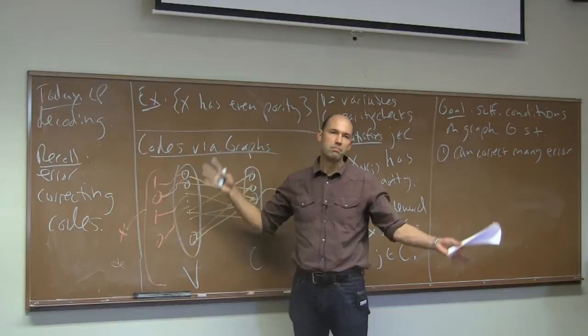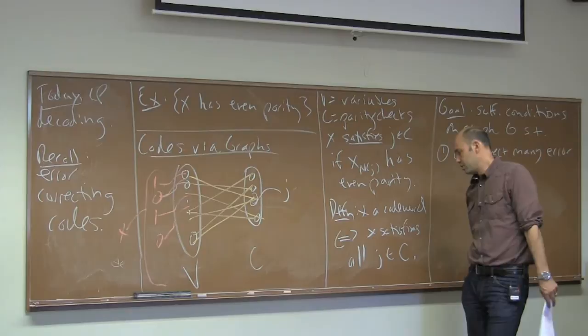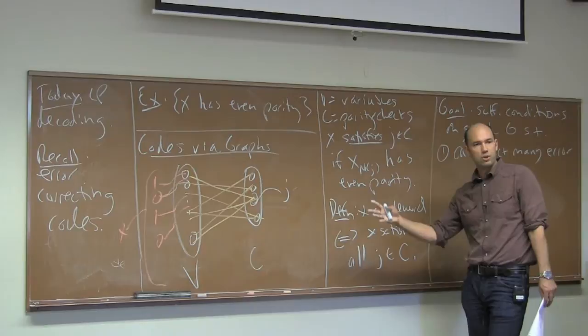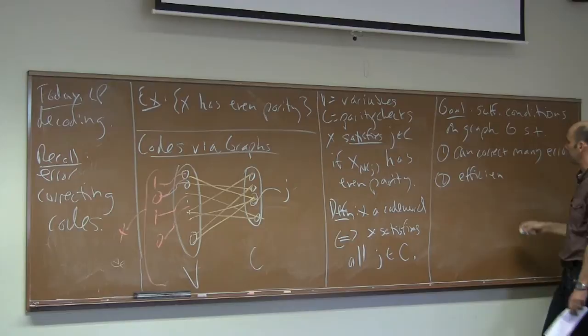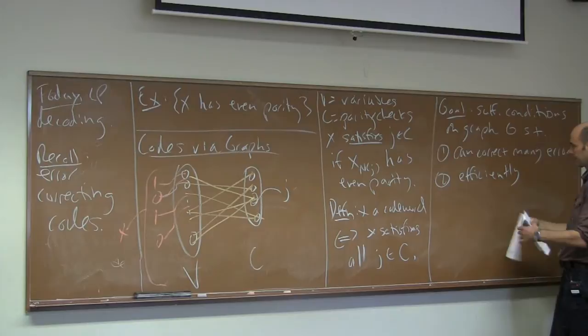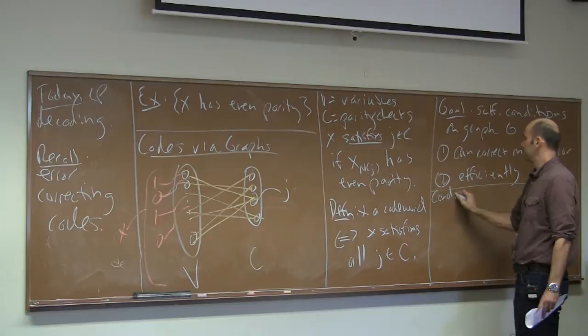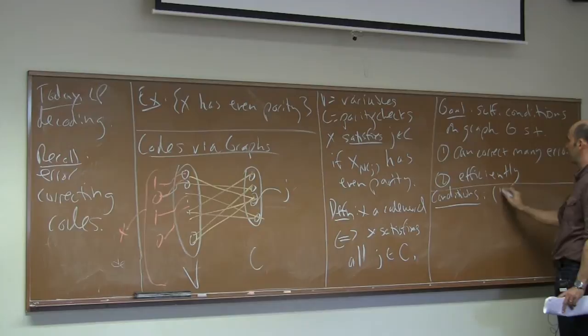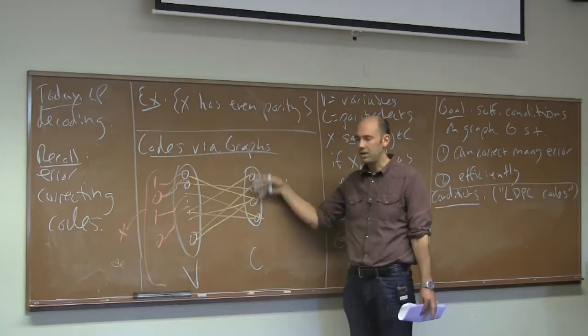The second thing we want is to actually do the correction — the decoding — efficiently. These conditions basically correspond to what people call low-density parity check codes, LDPC. If you search on that, you'll find lots of papers. The 'parity check' part is obvious from the constraints; the 'low-density' refers to the fact that the graph is sparse — bounded degrees.